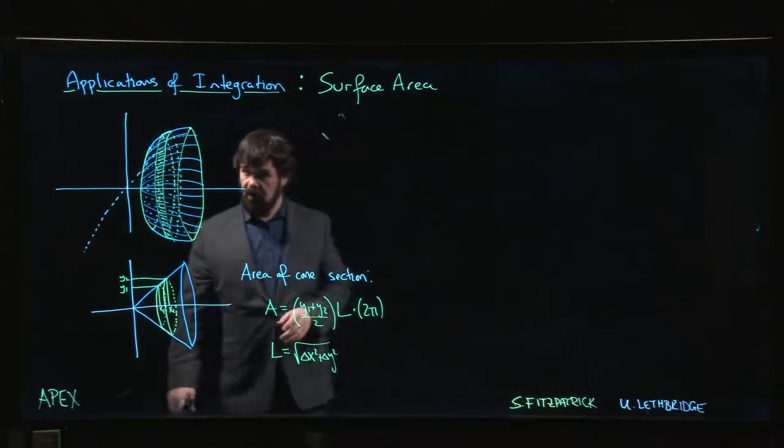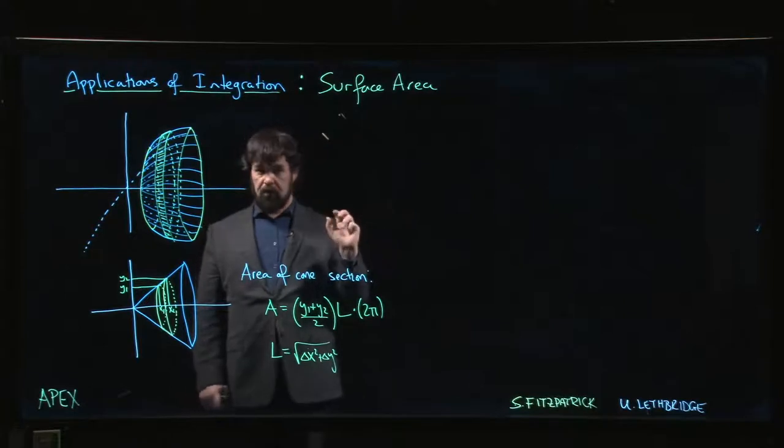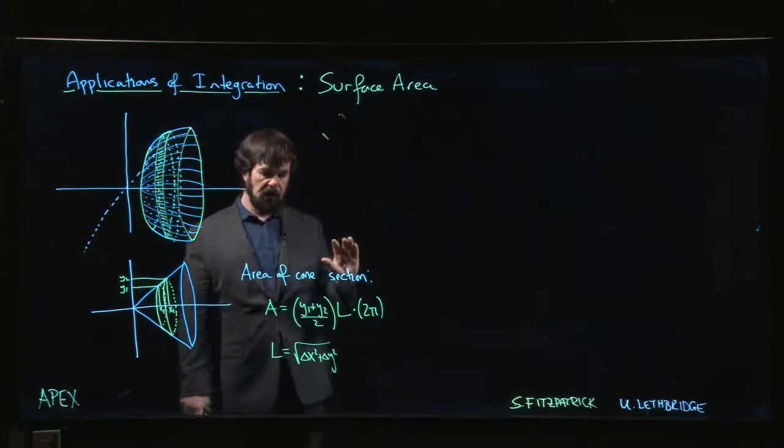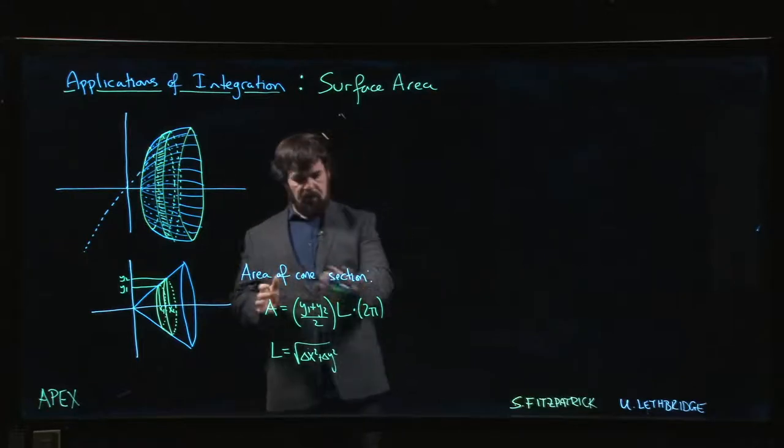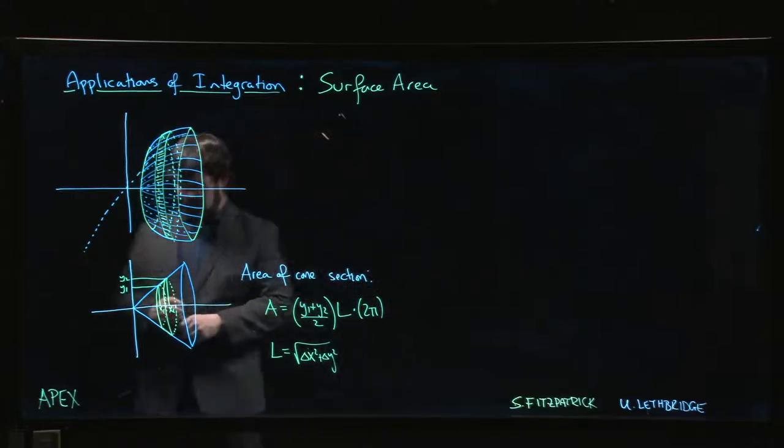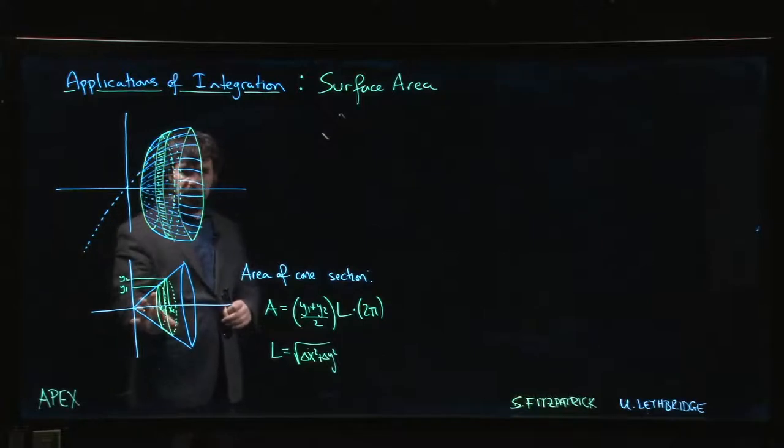So next we want to look at surface area. Surface area turns out to be very closely related to arc length, and the connection comes from essentially this idea here of the area of a piece of a cone, sometimes called a frustrum of a cone, this little bit that we've cut out from the cone.